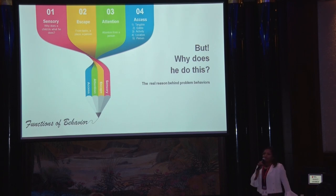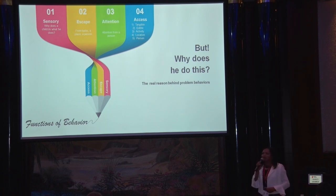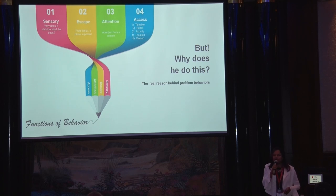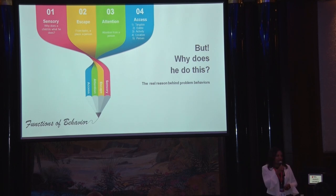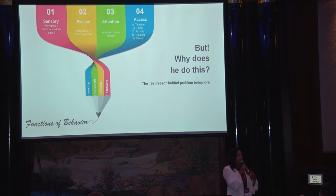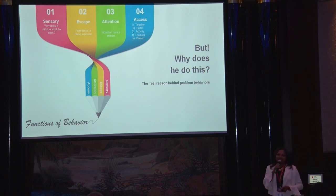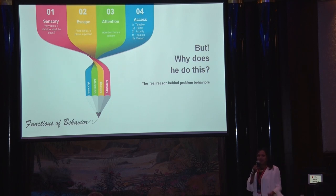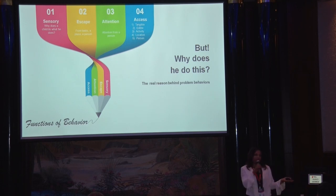There are four reasons why any organism engages in a behaviour. Sensory — the reason why we shake our legs; there's no particular reason, we just shake it because we feel good. Second, escape — I want to escape from your presentation, it's quite boring, so I'm going to look at my mobile and type messages. Third, attention — just screaming and creating a big drama so that you get attention, just like how I wore a fancy necklace so that you would get attention. The fourth one, access — access to tangibles, access to people, access to things. And there's always two ways to engage in a behaviour: appropriate behaviour or inappropriate behaviour.